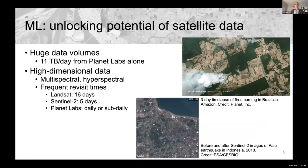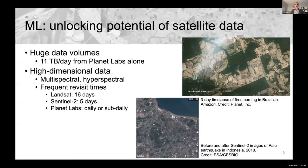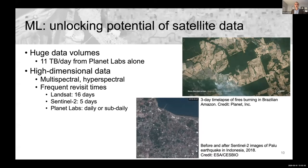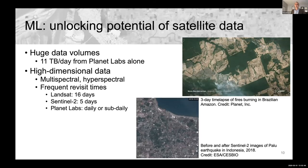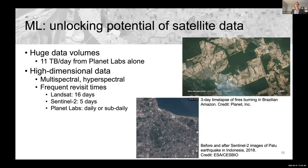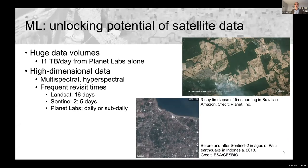We also have frequent revisit times, so there is a temporal dimension as well. Landsat, the workhorse satellite from the United States, revisits the same spot on earth every 16 days. Sentinel-2, the European Space Agency equivalent to Landsat, revisits every five days. And Planet Labs revisits the same location nearly daily or even sub-daily in some places. So we have a huge amount of data from these satellite sources.